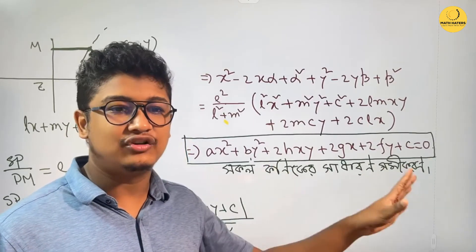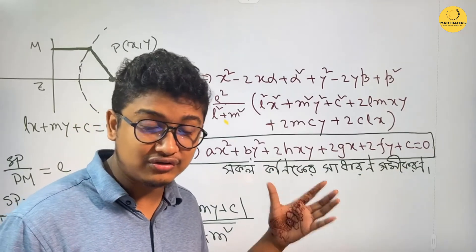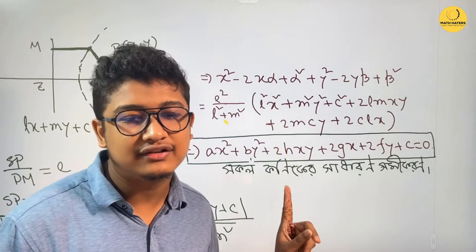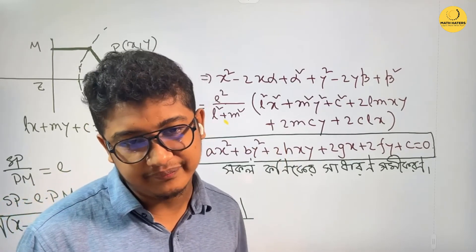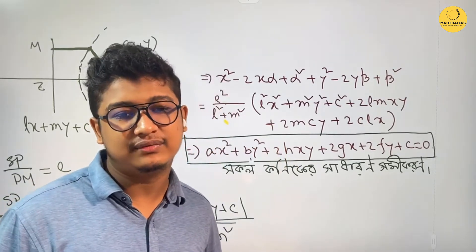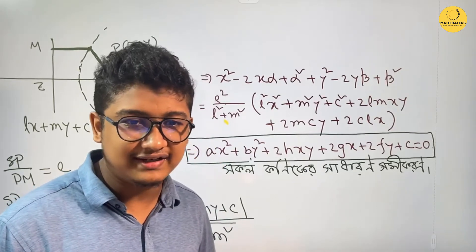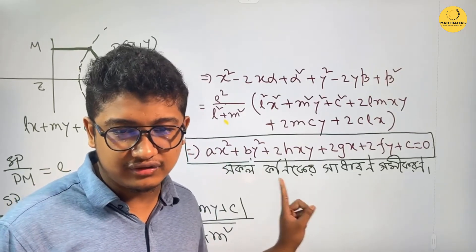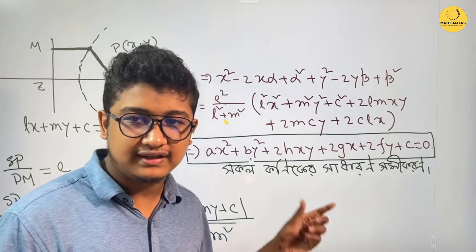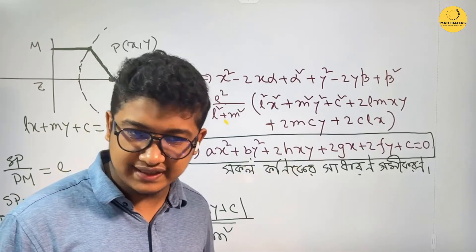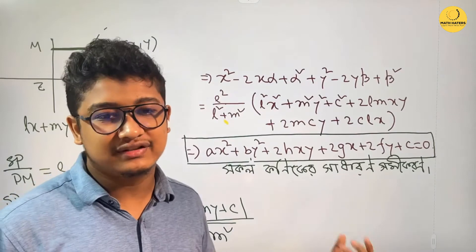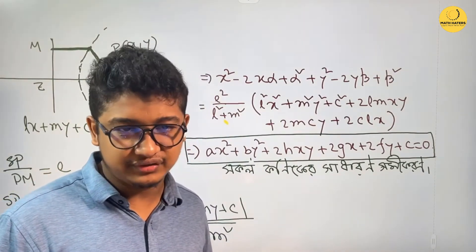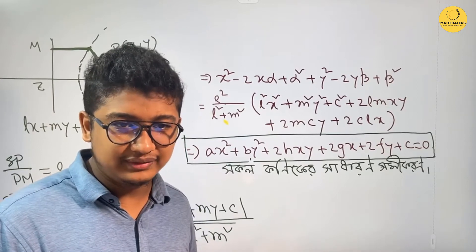This is a common structure that we have written as a conic shape. We have to combine this shape and check the shape as a classic general second-degree equation.